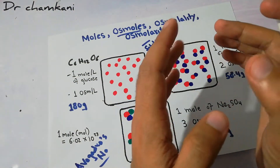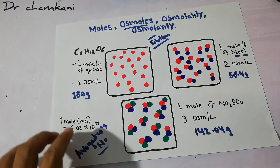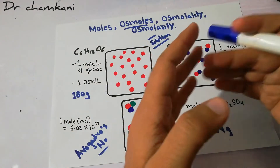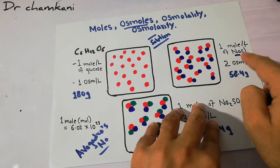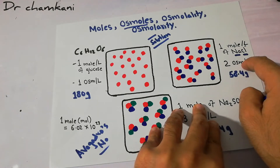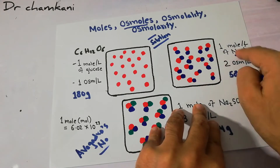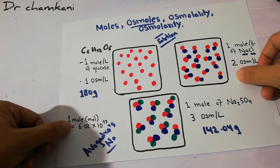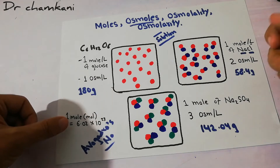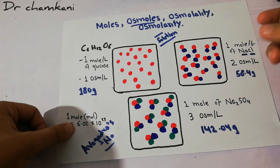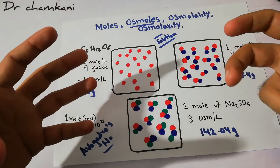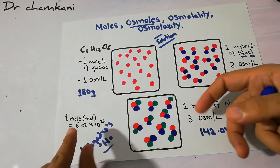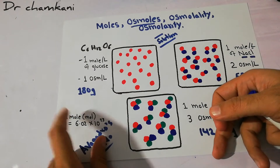So one mole of sodium chloride contains 58.4 grams and 6.02 × 10²³ molecules. But the osmotically active molecules in sodium chloride are 2 × 6.02 × 10²³ — you multiply by 2 for sodium chloride, because the osmotically active molecules are double once it is in solution form. The number of particles in the mole remains the same, but osmotically active particles become double. So one mole of sodium chloride is basically 2 osmoles per liter.